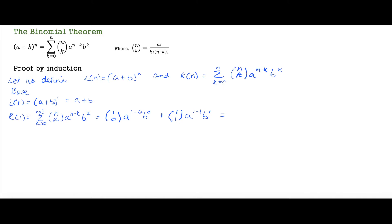We have a to the 1, and b to the power of 0 is just 1, and a to the power of 0 is just 1. So this gives us a + b. Therefore L_1 equals R_1, and our base case is satisfied. This holds when n equals 1.